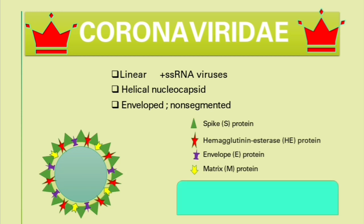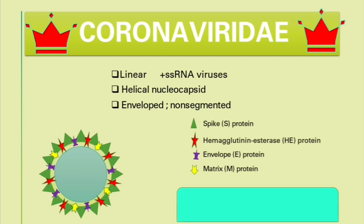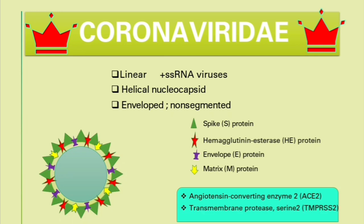Two entry points used by this virus: the first is angiotensin-converting enzyme 2 or ACE2, and the second is transmembrane protease serine 2 or TMPRSS2. These proteins are found on host cells, primarily the type 2 pneumocytes in the lungs.